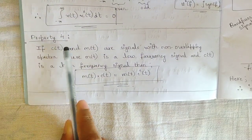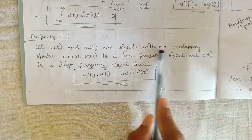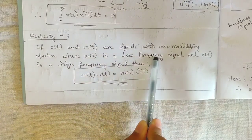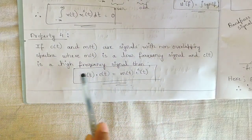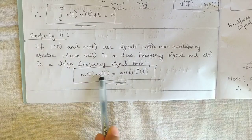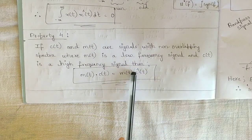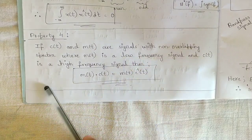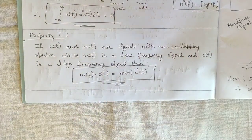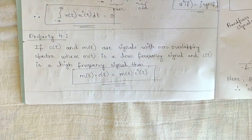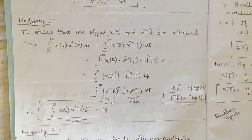Property 4 states that if c(t) is a carrier signal and m(t) is a message signal with non-overlapping spectra — m(t) being low frequency and c(t) being high frequency — then the Hilbert transform of m(t)·c(t) equals m(t)·ĉ(t), where ĉ(t) is the Hilbert transform of the carrier. These are the four important properties of the Hilbert transform.